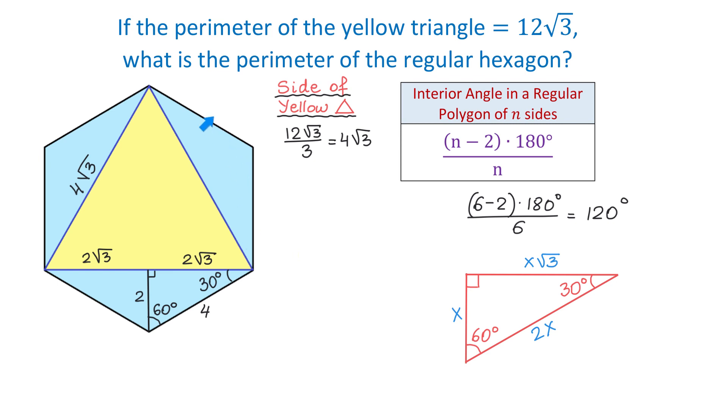And now, to find the perimeter, which is the distance around, we will multiply 4 by 6. And 4 times 6 equals 24 units. So we just found the perimeter, and the problem is completed.